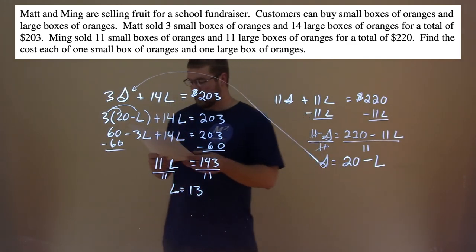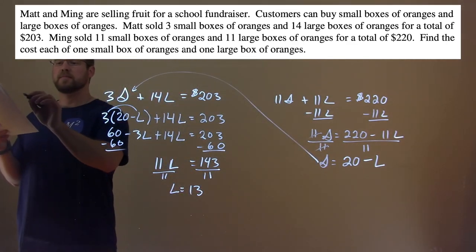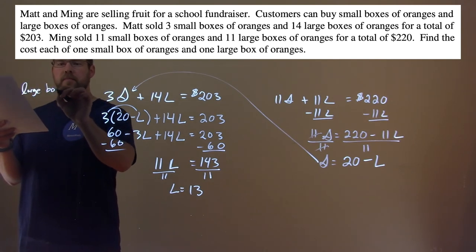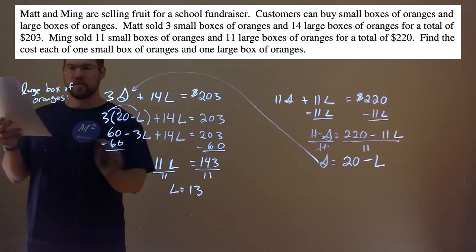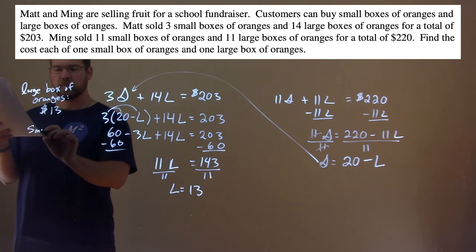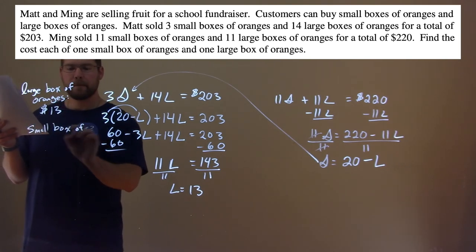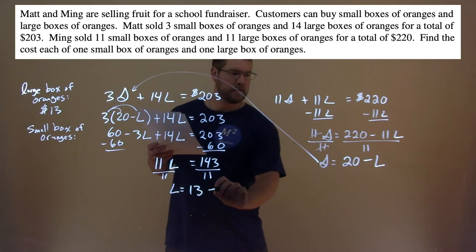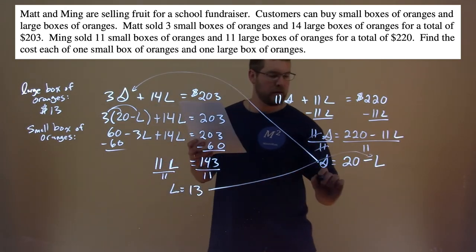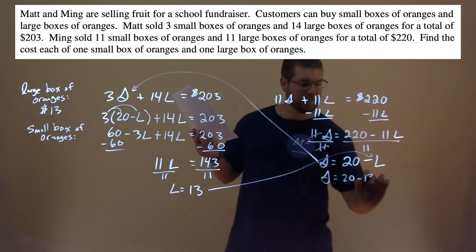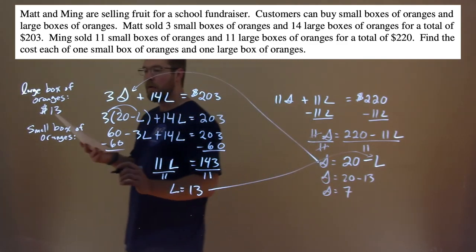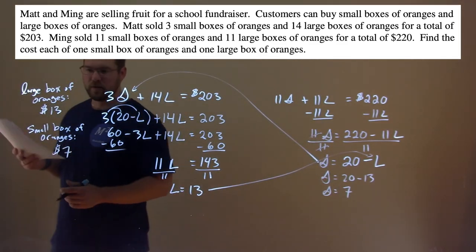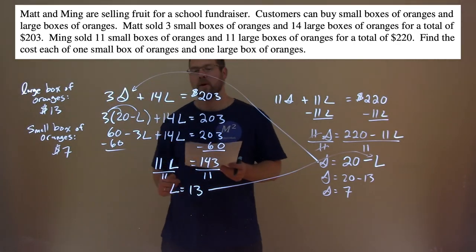Now we take L equals 13 and plug it into our equation: S equals 20 minus 13, and S equals 7. So the small box of oranges costs $7 and the large box costs $13.